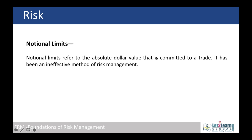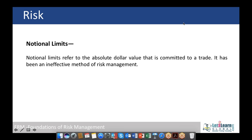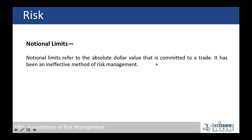Another risk management tool is notional limits — setting dollar amounts as maximum limits committed to a trade. When we buy a particular item, the trade will not be executed beyond a set maximum price. For example, if we set the maximum buy price at $25 and the price rises to $27, the order is automatically cancelled.